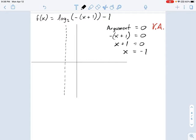Now, another key feature is going to be where the argument equals one, not zero, just one. So we go through the same steps, and we say negative x plus one equals one.